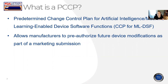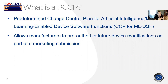It's abbreviated as PCCP or MLDSF. Basically, this is a plan that you can include in your marketing submission that will pre-authorize future device modifications that you intend to make to your device. So this would apply if you are submitting a 510K for a device that has an AI or ML algorithm as part of a software function, and you know you're going to be making certain changes. You can get those reviewed by the FDA without having completed the validations or having it implemented, and that will allow you permission to make those changes after you receive your authorization or clearance.